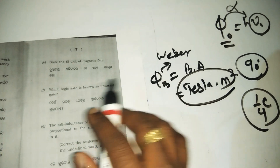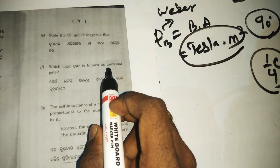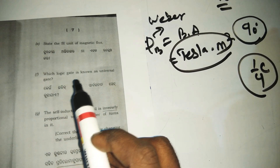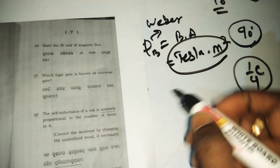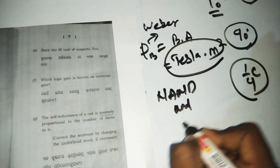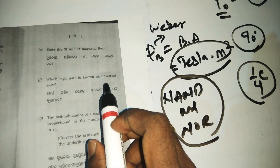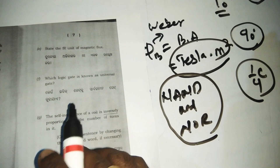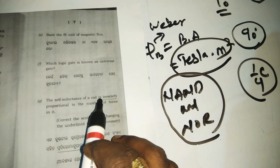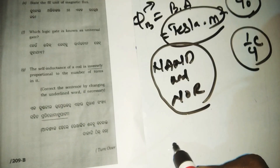Which logic gate is known as the universal gate? The universal gate: both NAND and NOR gates are called universal gates. The NAND and NOR gates are known as universal gates. This is an important question. Also, in a self-induction transformer, the number of turns is inversely or directly related.